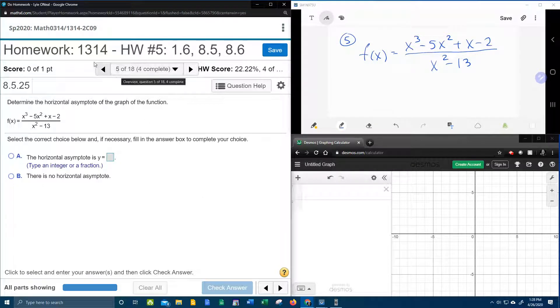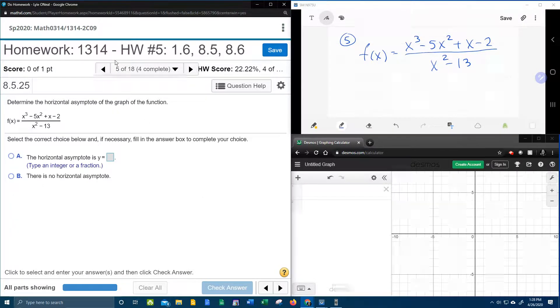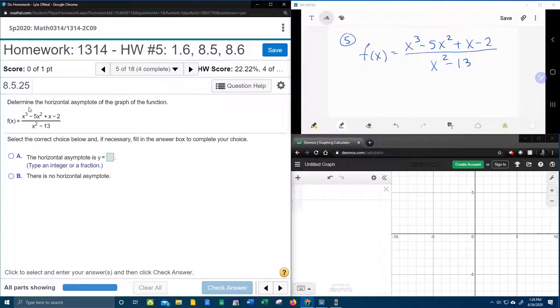Alright, here we go. Question number 5 in our college algebra homework number 5 in MyLabMath. Again, this is the third time now. They want us to determine the horizontal asymptote of the graph of this function.